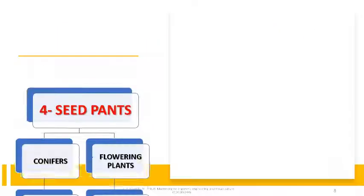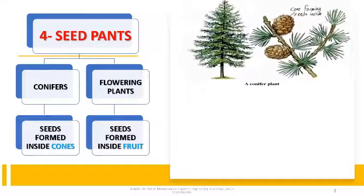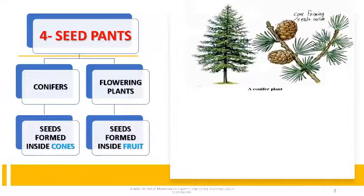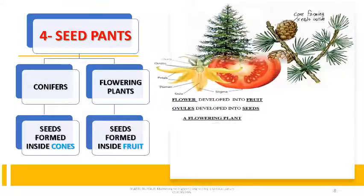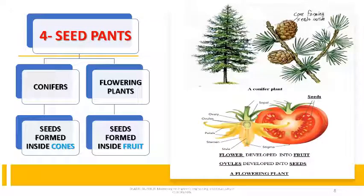Number 4: Seed plants, subdivided into two main types. Type 1 — Conifers: they form seeds inside cones. Type 2 — Flowering plants: they form seeds inside fruit. Fruit is formed from the development of the ovary of the flower. Seeds are formed from the development of ovules (eggs) inside the ovary.